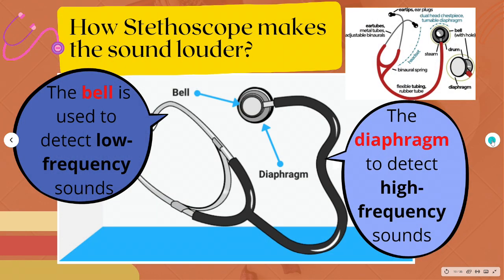Doctors put the ear tips into their ears and listen to the sound. The stethoscope has two different heads to receive sound: the bell and the diaphragm. The bell is used to detect low-frequency sounds like some heart murmurs and some bowel sounds. The diaphragm is used to detect high-frequency sounds like breath sounds and normal heart sounds.